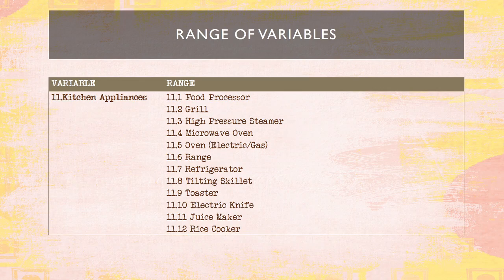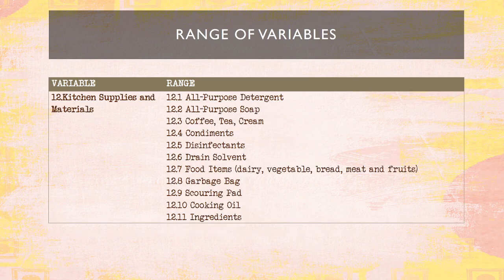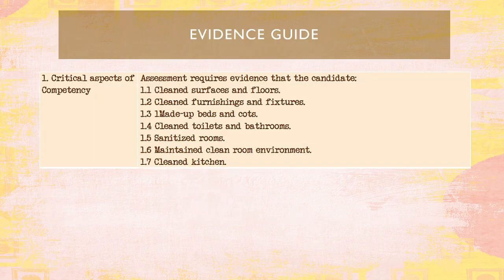We have kitchen appliances — the things used to prepare food for clients — and kitchen supplies and materials. The evidence guide: critical aspects of competency — assessment requires evidence that the candidate must clean surfaces and floors, clean furnishings and fixtures, make up beds and cots, clean toilets and bathrooms, sanitize rooms, maintain room environment, and clean kitchen.